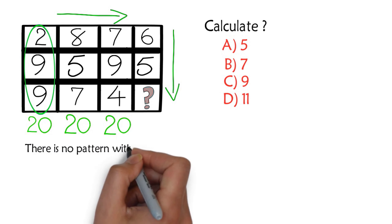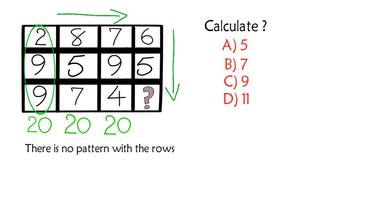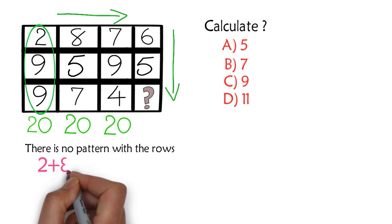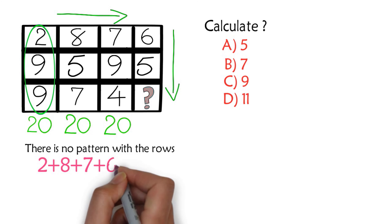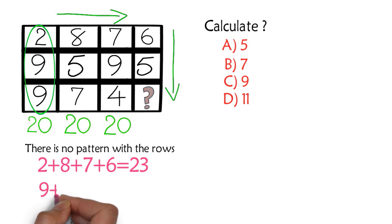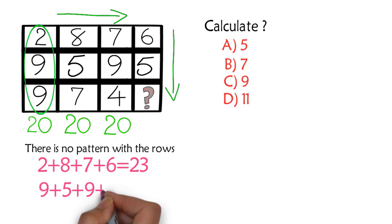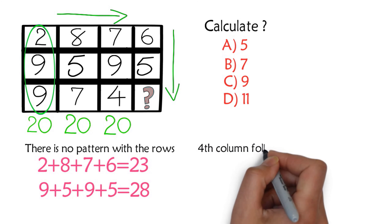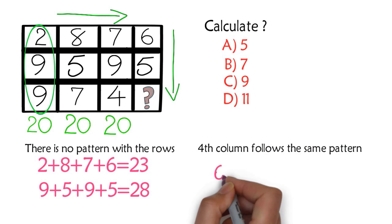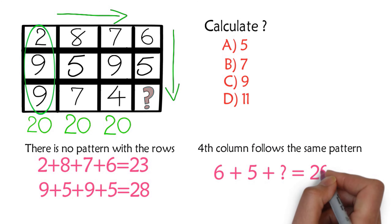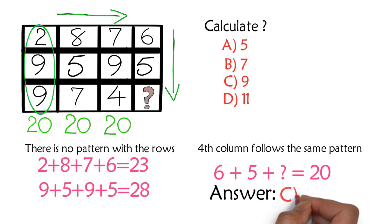We also want to check if there is a pattern with the rows, and there is no pattern. The first row adds up to twenty-three: two plus eight plus seven plus six equals twenty-three. The second row adds up to twenty-eight: nine plus five plus nine plus five equals twenty-eight. So there is no row pattern. Based on this, you can calculate the missing value: six plus five plus question mark equals twenty, so the answer is C, nine.